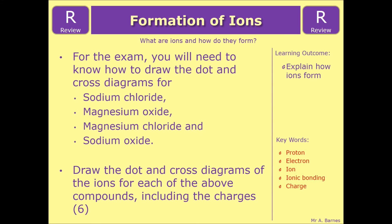So the first thing you'll need to do is find out what group they're in, so that you'll know how many electrons are in the outer shell, and then use that to draw the dot and cross diagrams of the ions for each of the above compounds, and making sure you put the brackets and the charges in. That's worth six marks. And that ends this video.